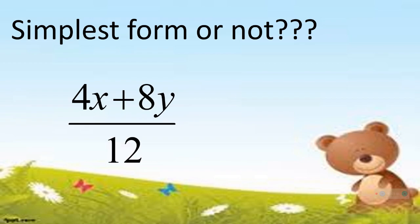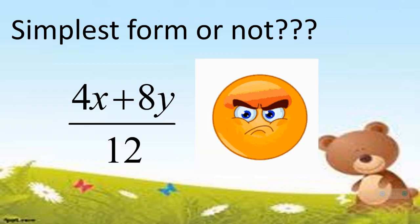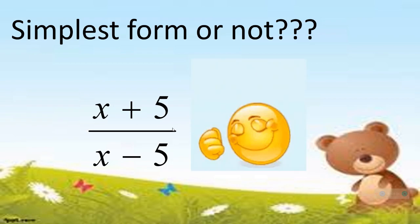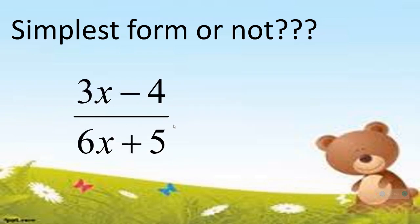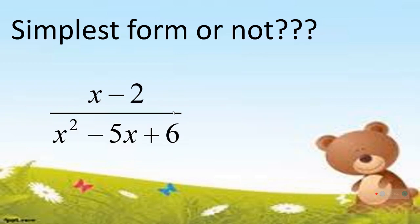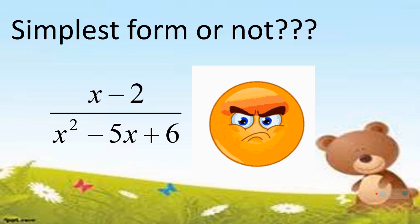We have 4x plus 8y all over 12. This is not written in simplest form. Next, we have x plus 5, which is written in simplest form. How about 3x minus 4 over 6x plus 5? It is already written in simplest form. And we have x minus 2 all over x squared minus 5x plus 6. This is not written in simplest form because of the denominator.